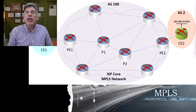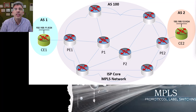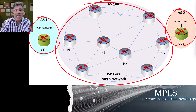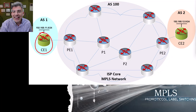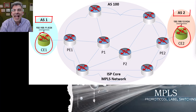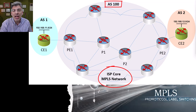The topology we'll be working with today consists of three BGP autonomous systems. We have two customer sites where the CE1 router at the first site is found within BGP AS1, and the CE2 router at the second site is found within BGP AS2. The ISP network consists of a single BGP AS with an AS number of 100.